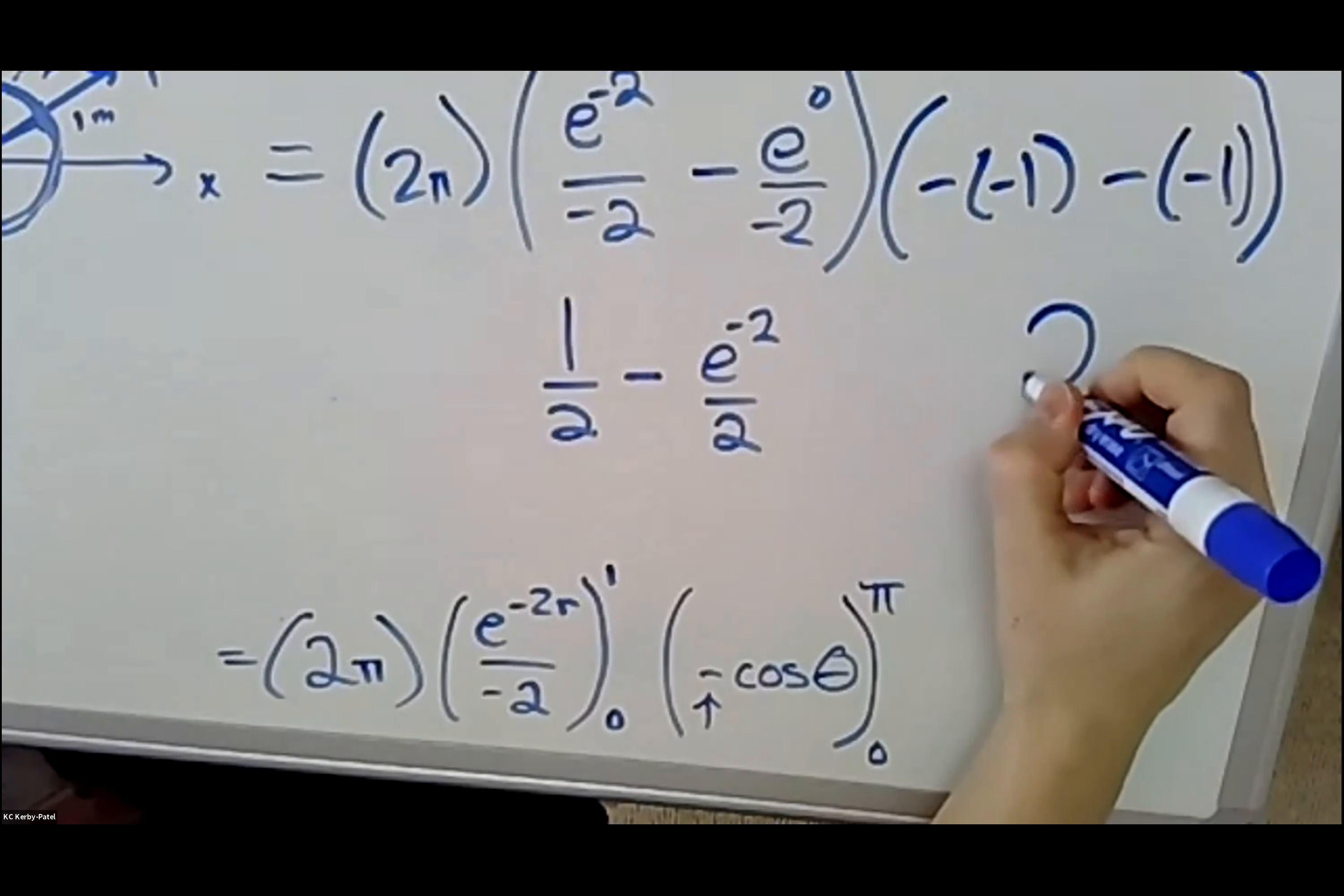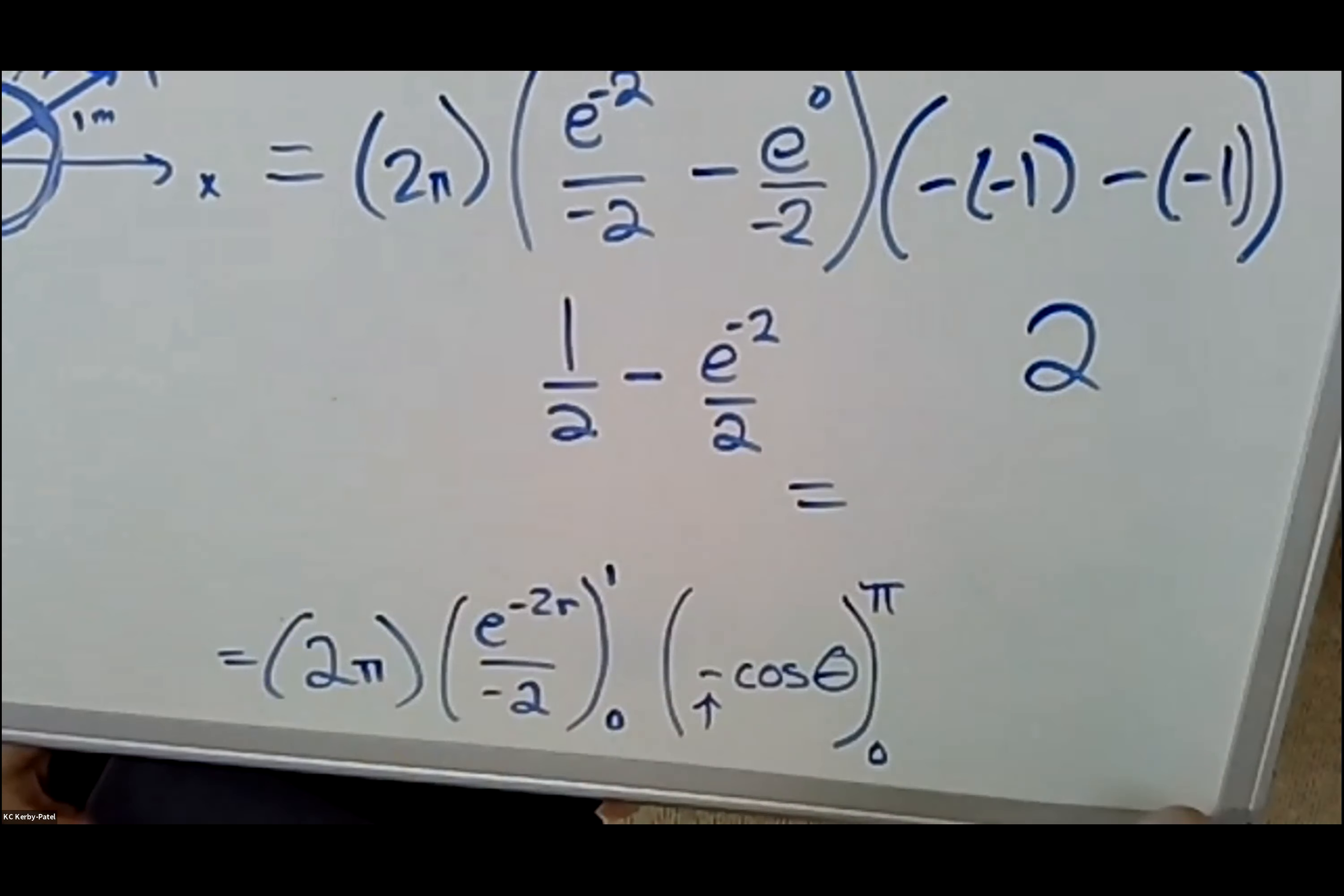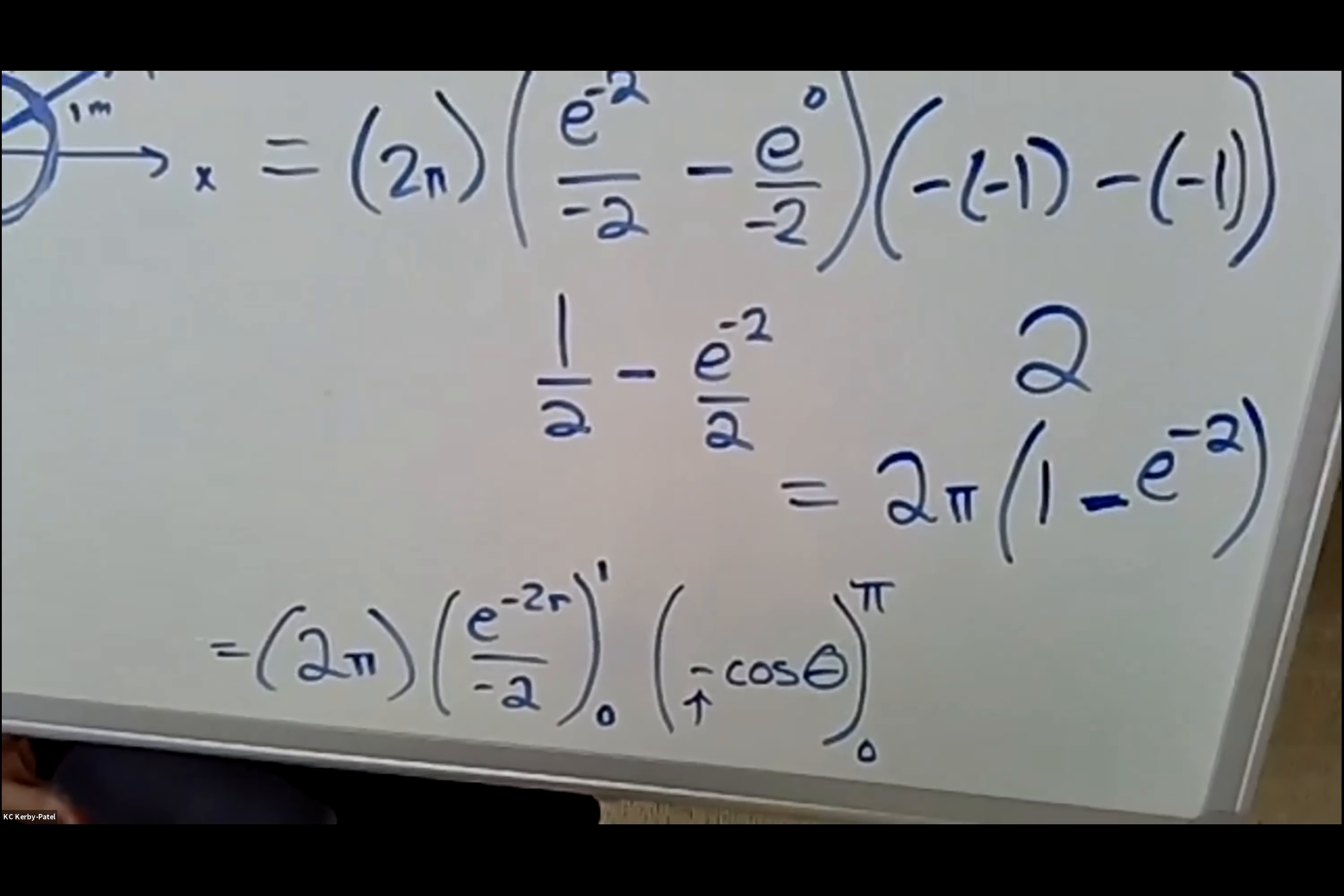So this whole thing turns out to be two times 2π is 4π, but actually then there's a factor of 1/2, so I'm going to write it as 2π times (1 - e^(-2)) right there.